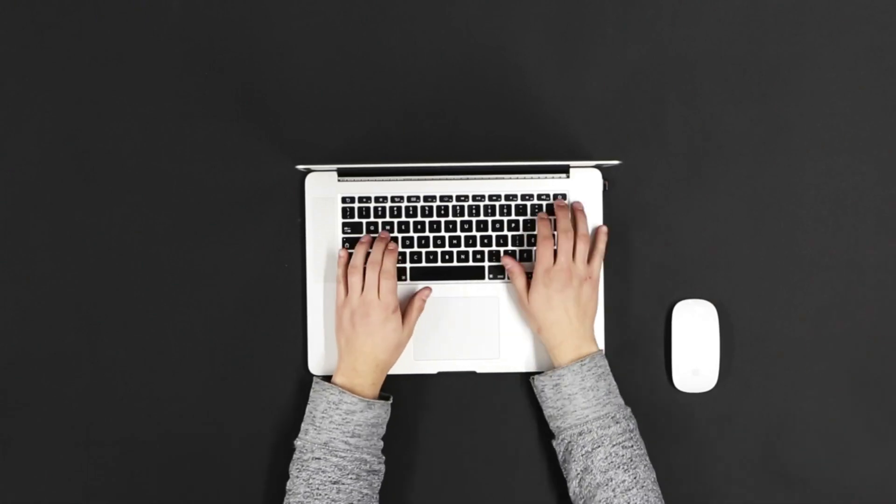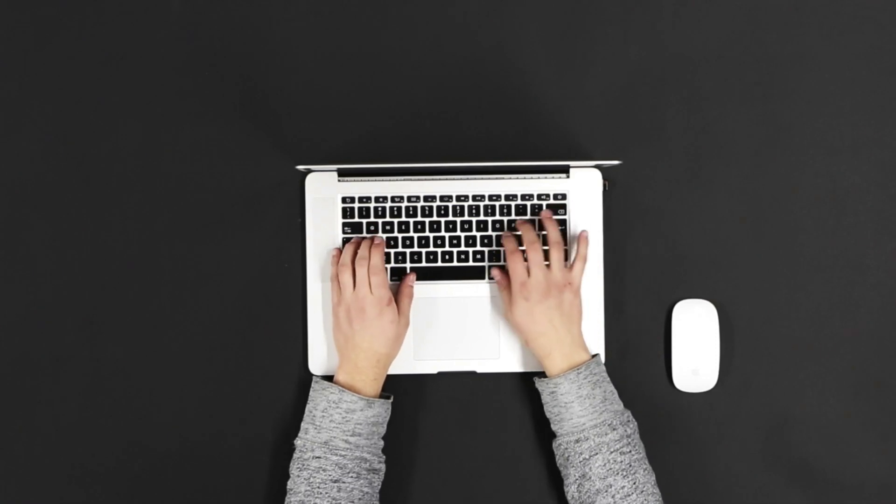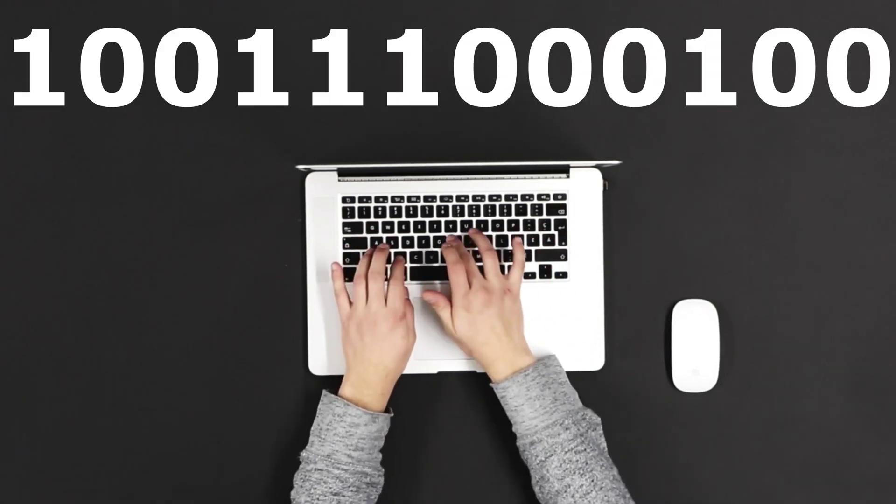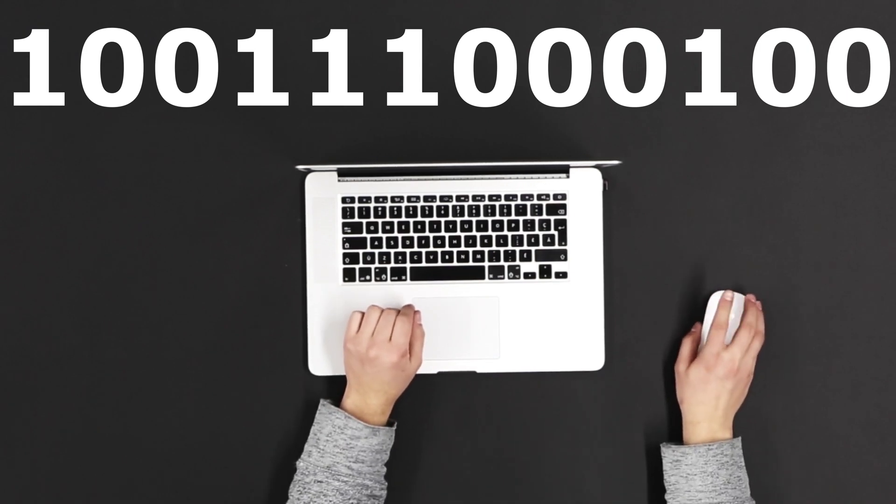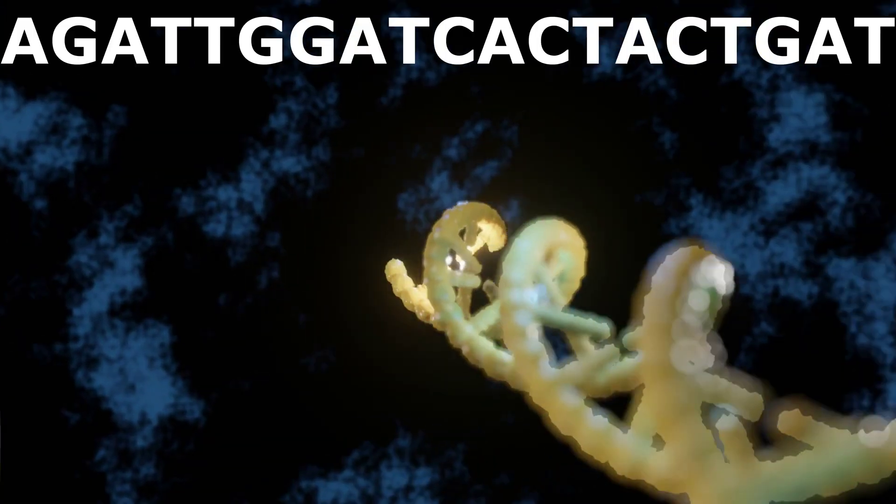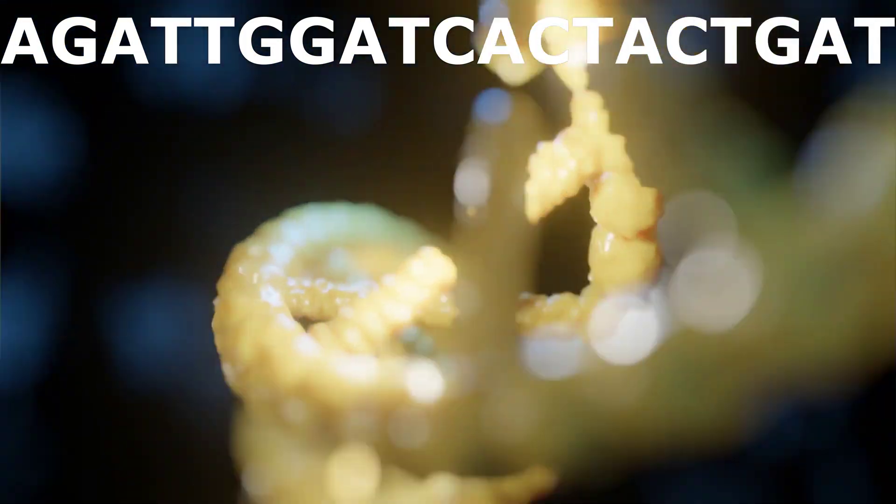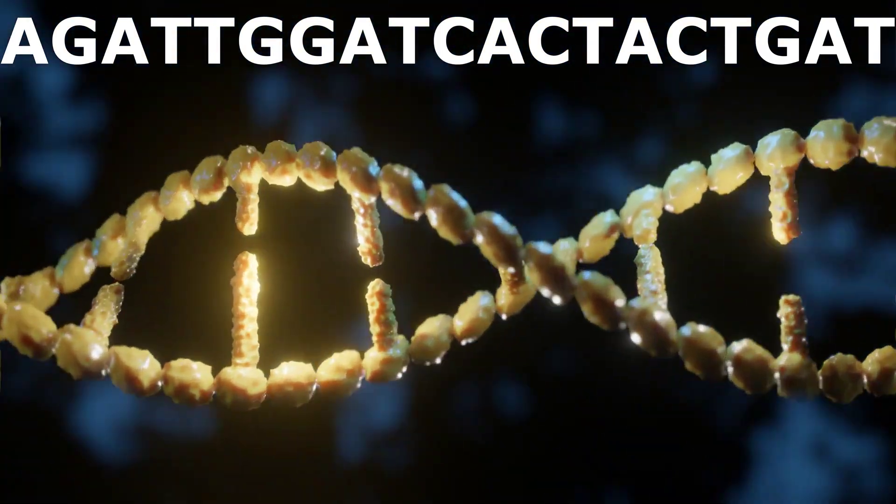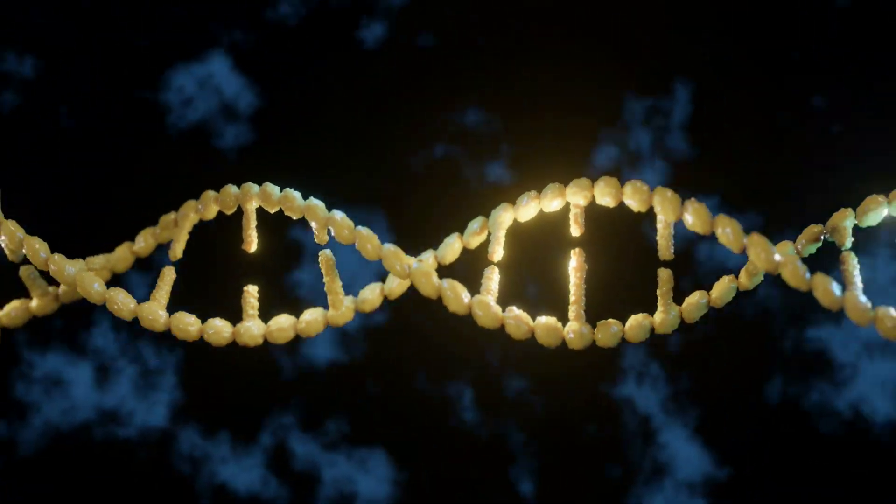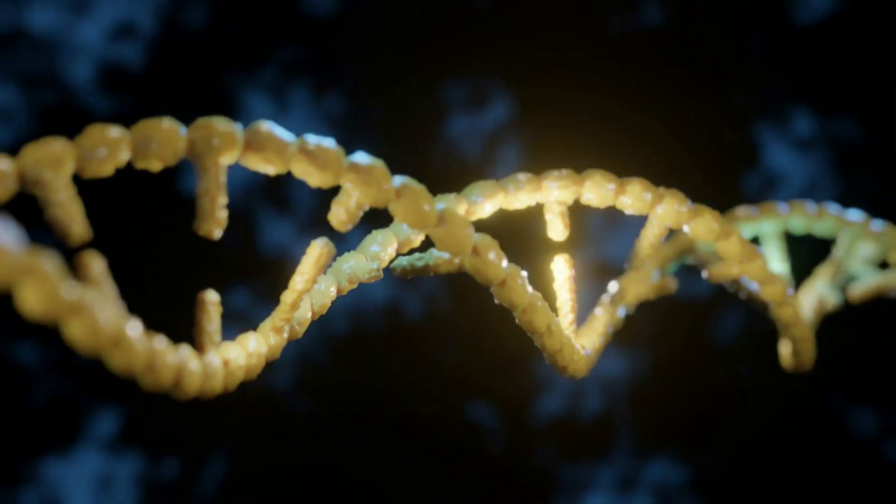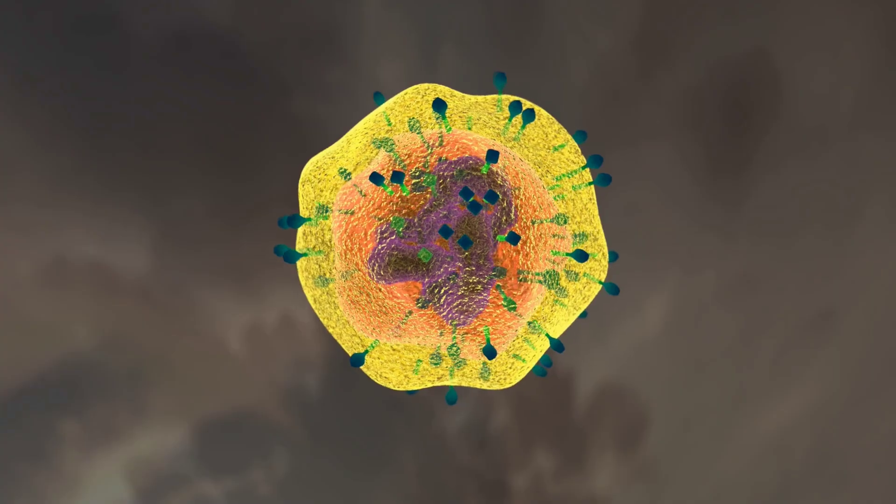If we look at how a computer binary instruction looks like, you will see it is something like one zero zero one one one zero zero zero zero one zero zero zero. Similarly, A G A T T G G A C A C T A C T G A T is an example of an instruction in the DNA code written using the four letters A, T, G and C.